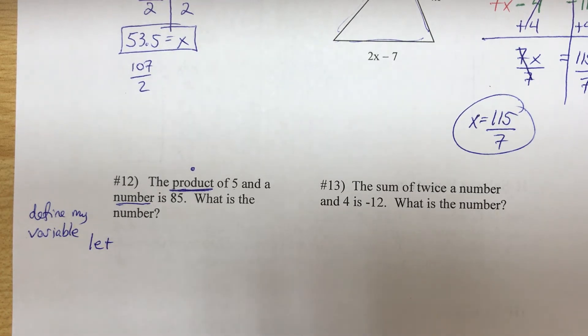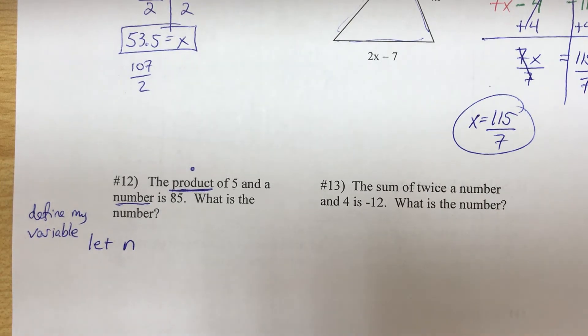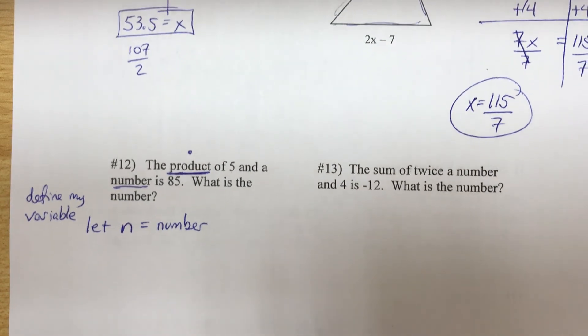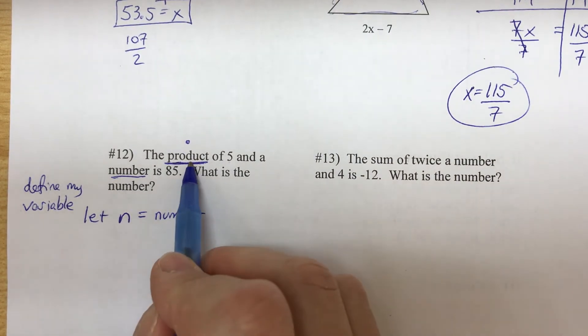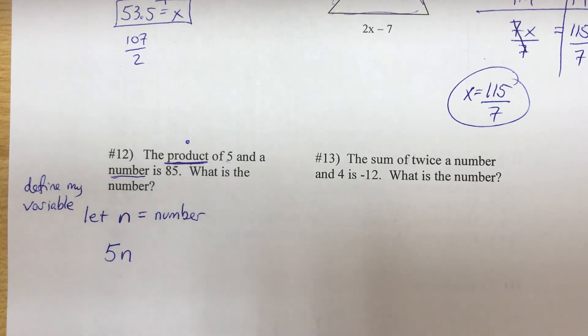I will use n, but you could use x or a or b, any letter. Let n equal the number. Okay, so n represents my number. The product of 5 and a number, well that's 5 times n, or 5n. 'Is' means equals 85.